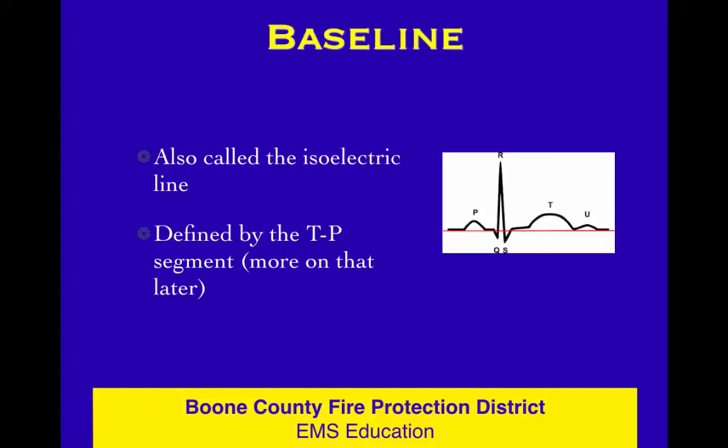First, let's talk about the isoelectric line, because that's the red line in the diagram. It's the baseline, and the waves are either above that line, below that line, or right at that line. It's just general geography of an ECG.